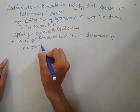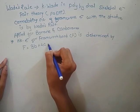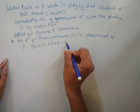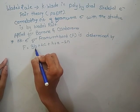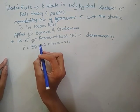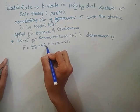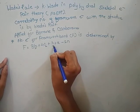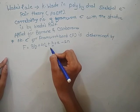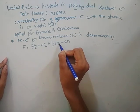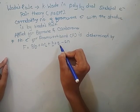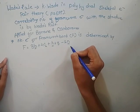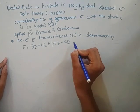F is equal to 3B plus 4C plus H plus X minus 2N, where B is the number of boron atoms, C is the number of carbon atoms, H is the number of hydrogen atoms, X is the amount of negative charge on the ion, and N is the number of vertices, where N is equal to B plus C.